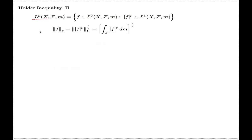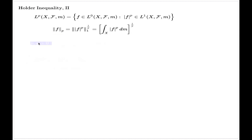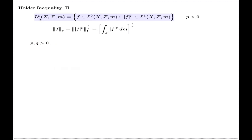Given this new class of functions and given this quantity, the Hölder inequality — the general version of the Hölder inequality — looks like this. The p here is a positive number. So this class exists and you can define this class for every positive number p.